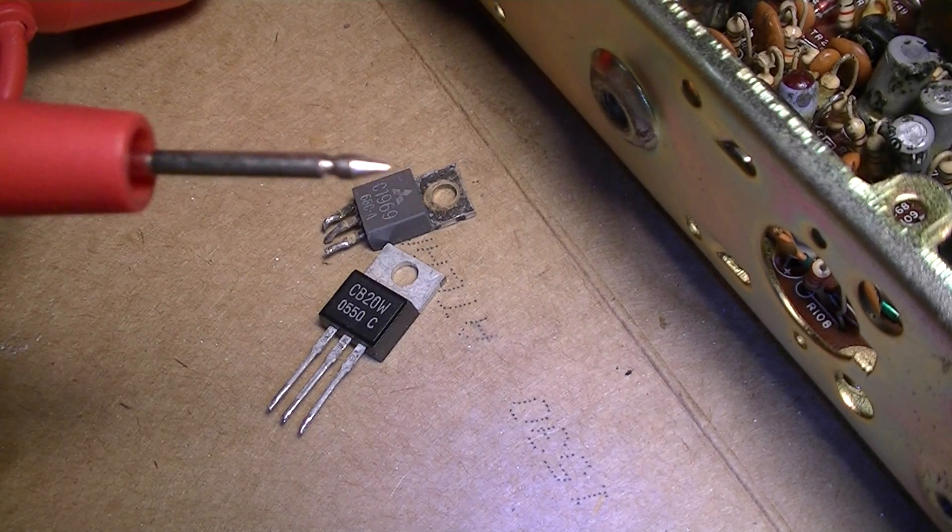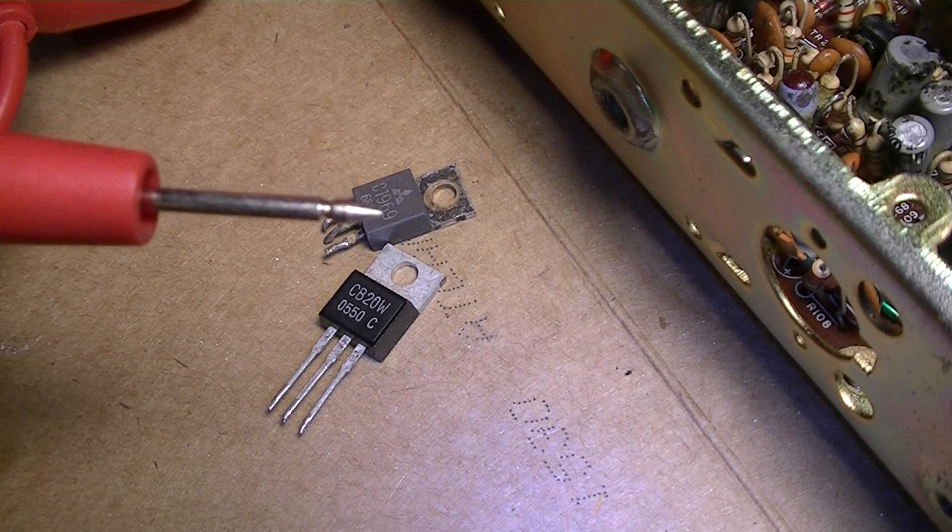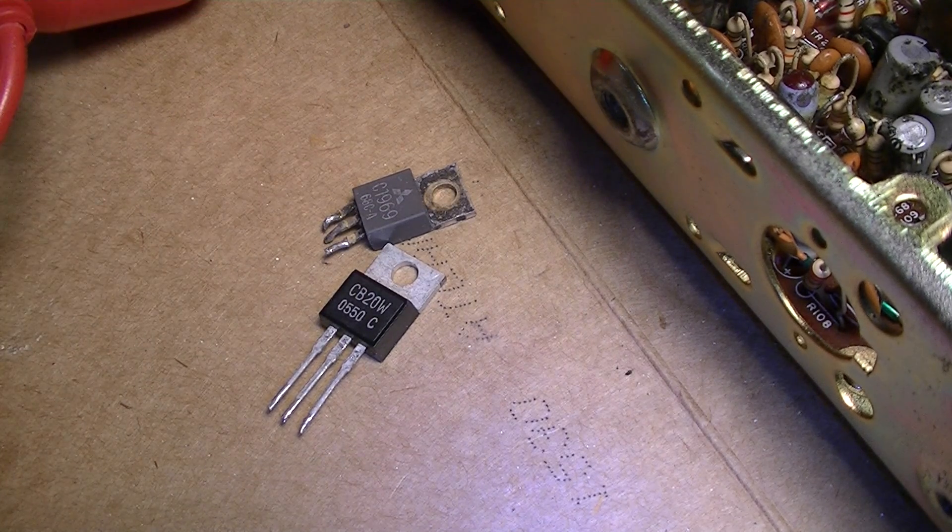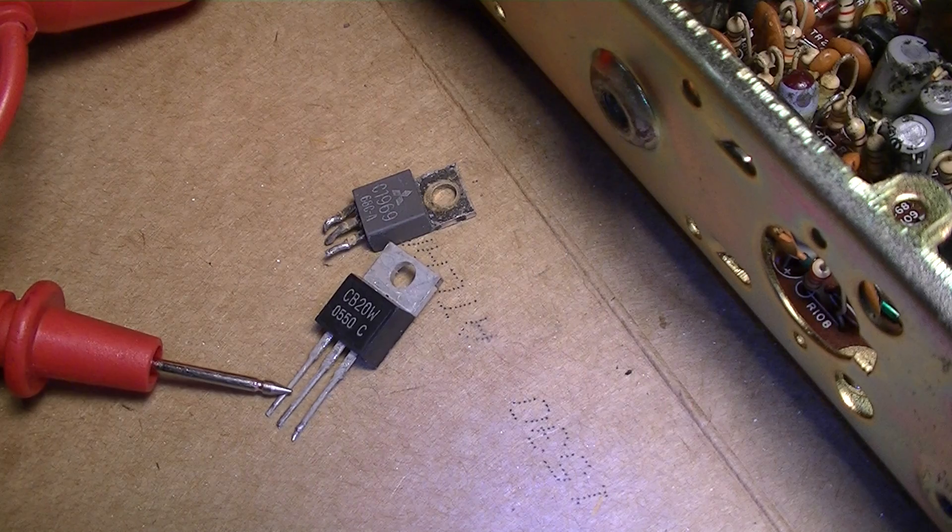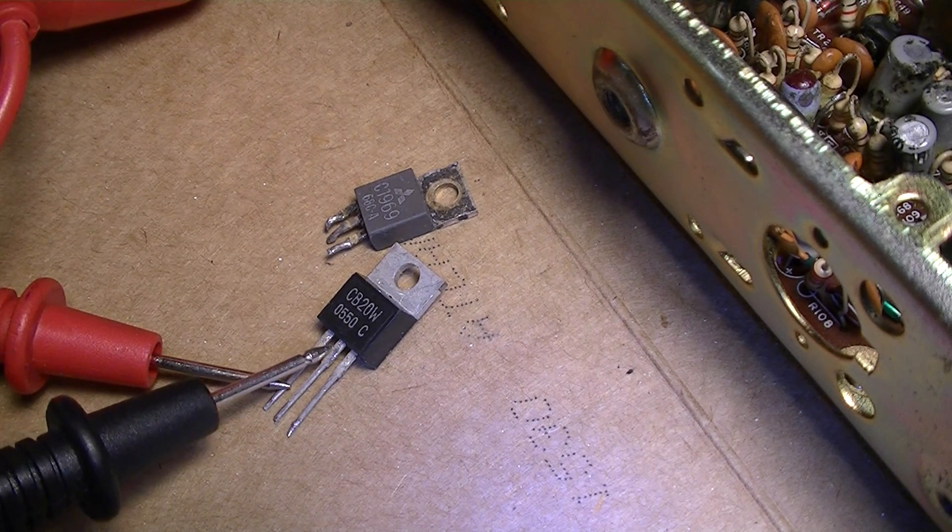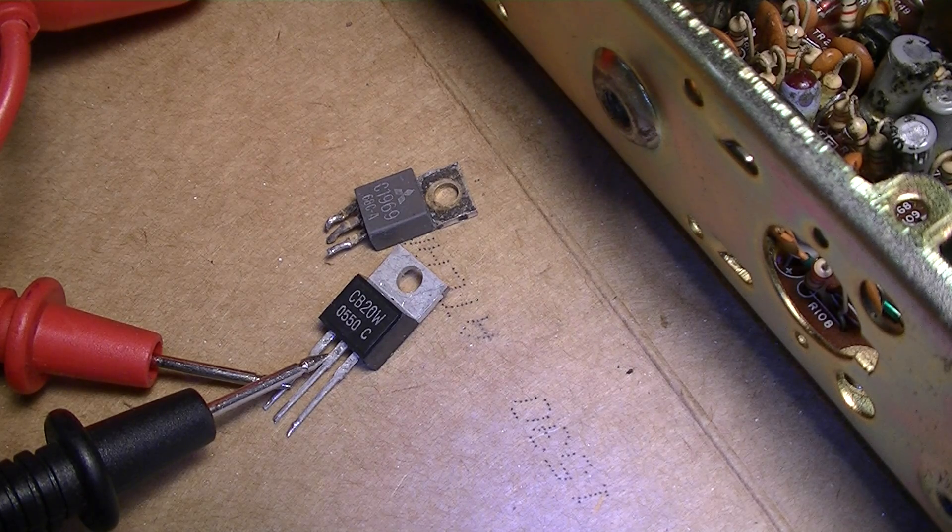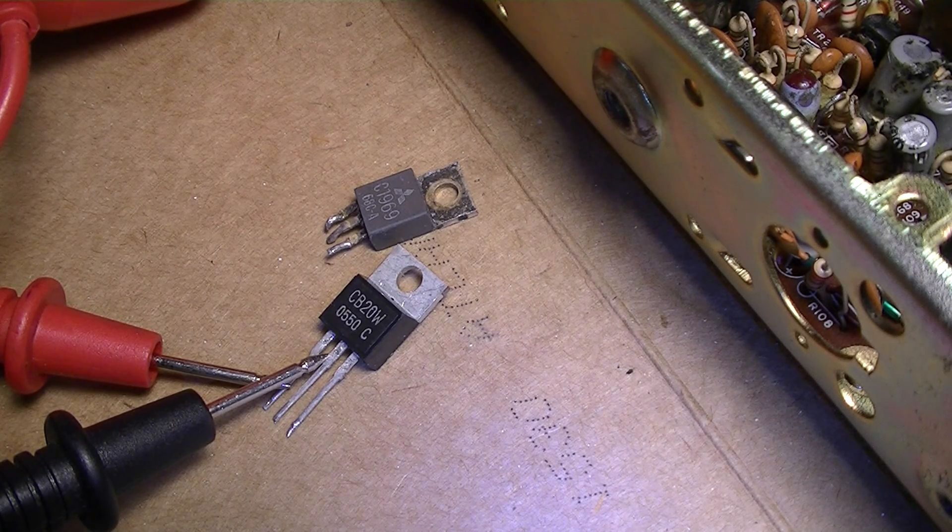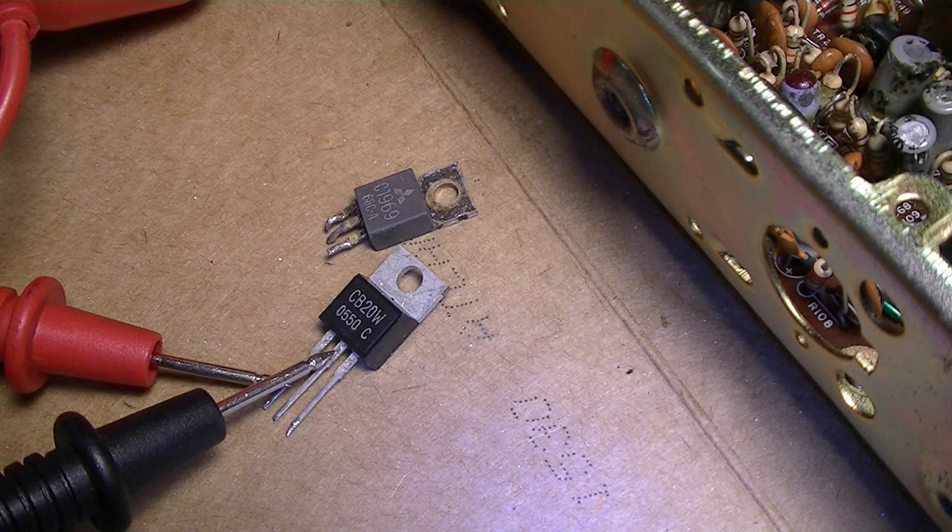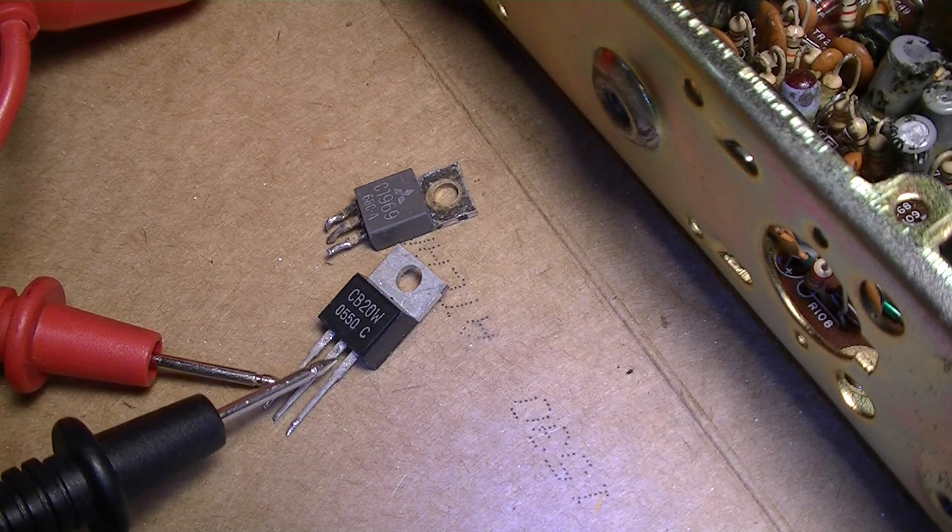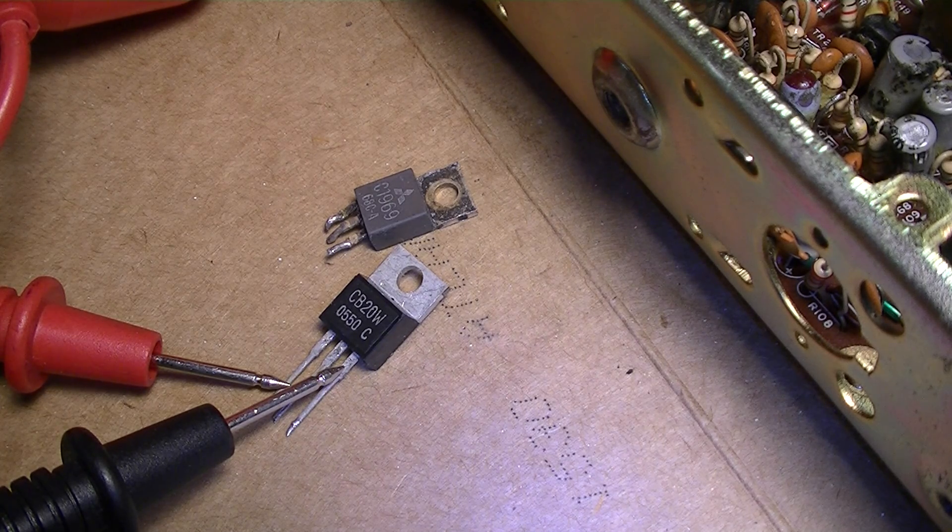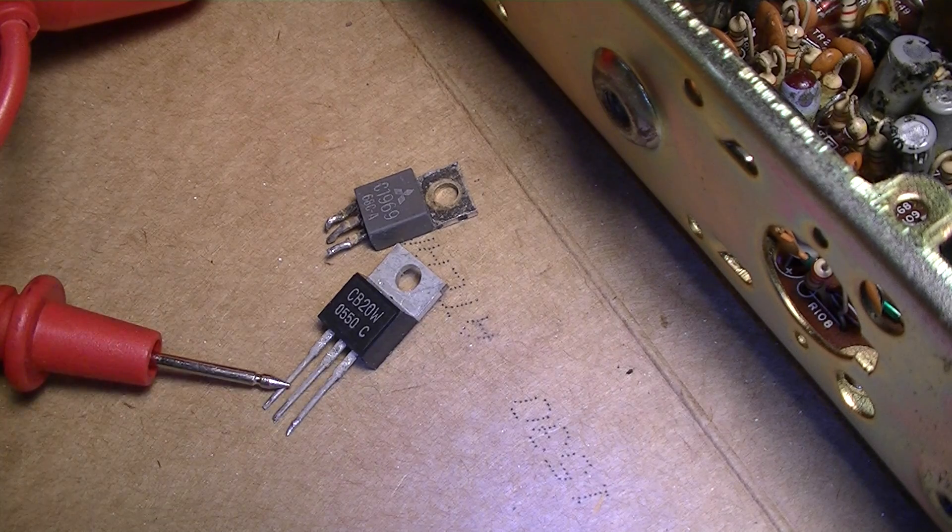With your red lead in your left hand and your black lead in your right hand, you're gonna touch the base and you're gonna go across. My meter says 709 right now. You go across and my meter says 711 right now.